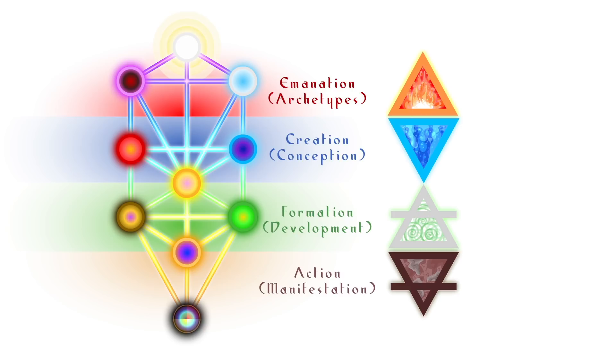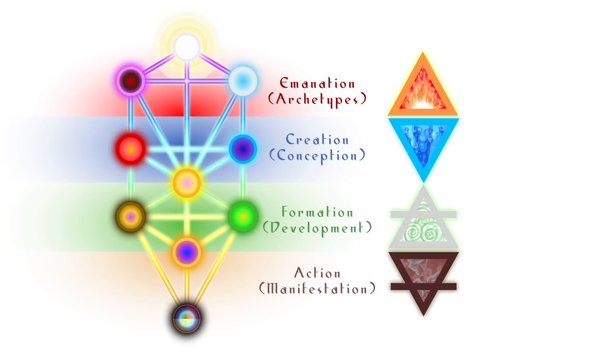At the top, you have the world of emanation, which is fire, the world of creation, water, the world of formation, air, and the world of action, earth. These are the four stages in the process of creation, according to the Kabbalah.